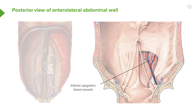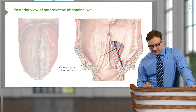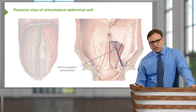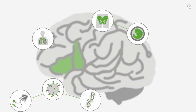These inferior epigastric arteries and veins are running up through the rectus sheath to supply it with oxygenated blood and remove the deoxygenated blood. We can also see some important landmarks which we'll come back to.